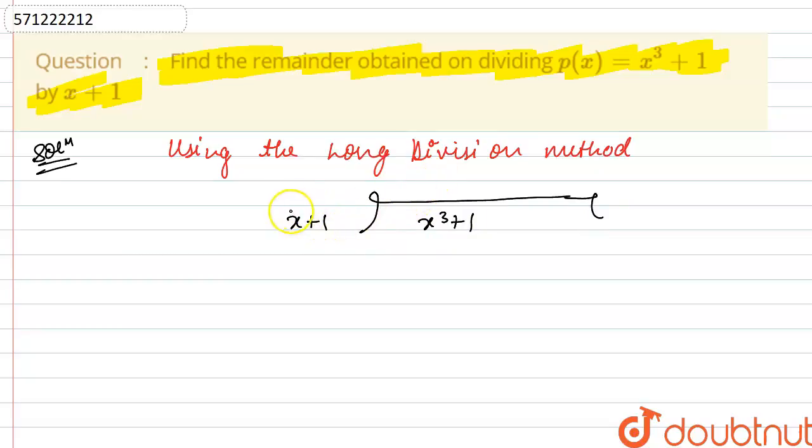So firstly, I will multiply this divisor by x squared. So I am taking x squared in the quotient. So multiply x plus 1 by x squared. So we will have x cubed plus x squared.